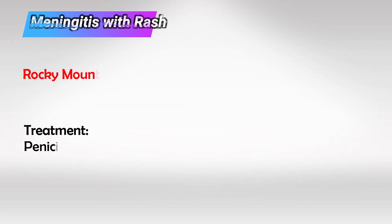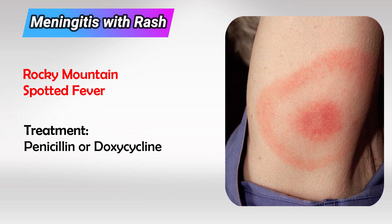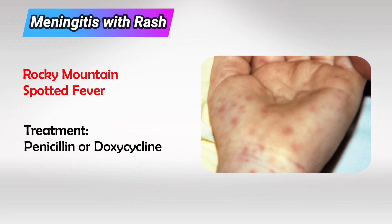If the meningitis is associated with a rash, we look at the rash. If it's targetoid, this is likely Lyme disease and can be treated with penicillin or doxycycline. If the rash is non-targetoid, this is likely Rocky Mountain Spotted Fever, especially if there is a history of hiking, and the treatment is also doxycycline.